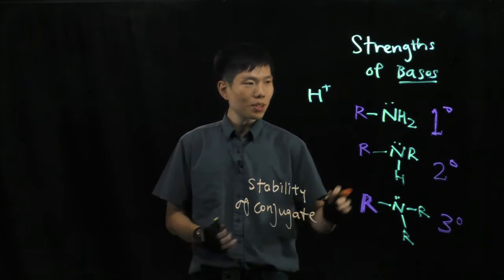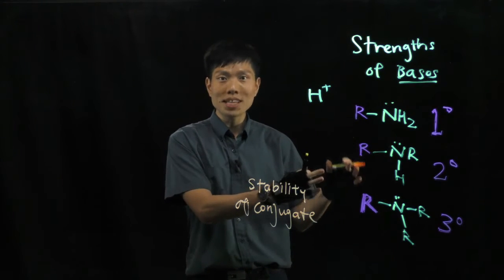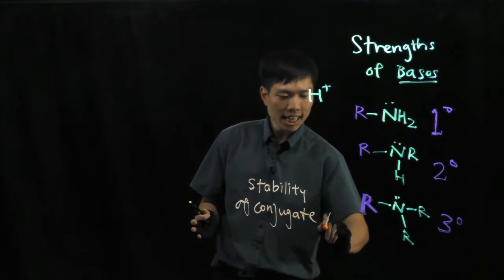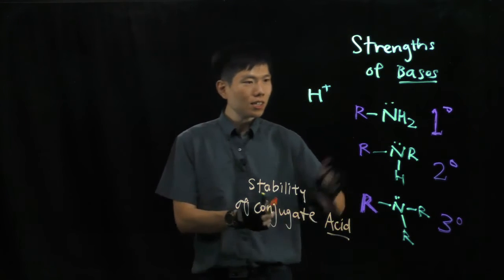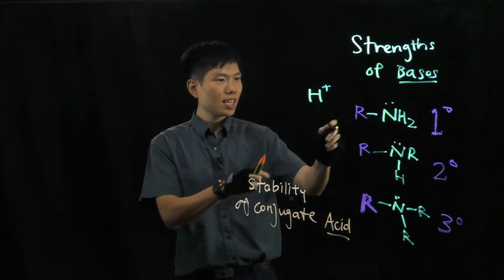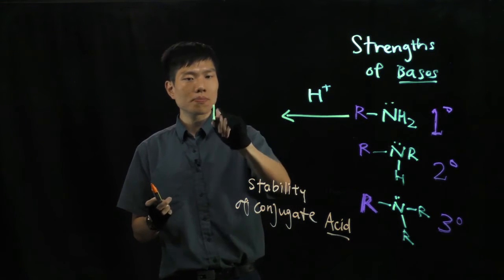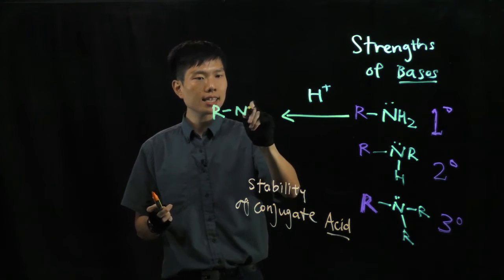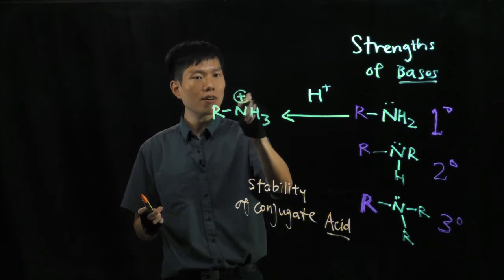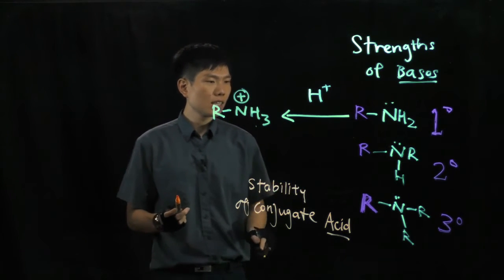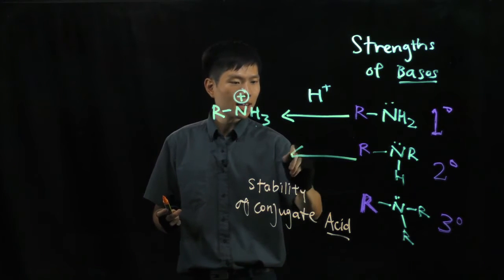Now in this case, because we are looking from the point of the base, that means the conjugate will be a conjugate acid. So if I grab the H+, what do we form? For the primary amine, we form RNH3+. The positive charge is now on the nitrogen.